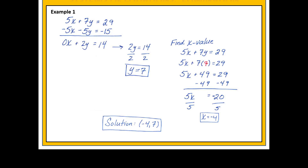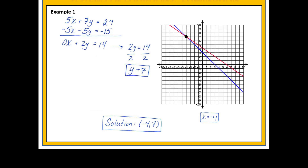Remember what a solution to a system is. A solution is the value of x and y that makes both of the original equations true at the same time. It's also the point where the two lines intersect. If I were to graph both lines given by the original equations, those lines would intersect at the point negative 4, 7.